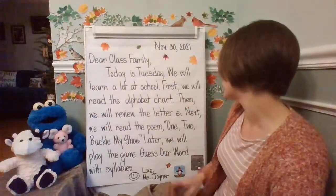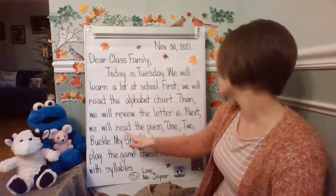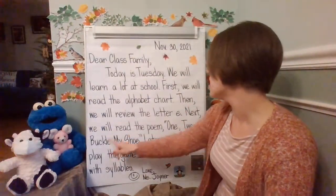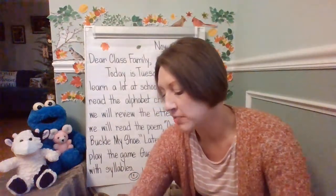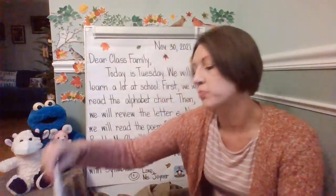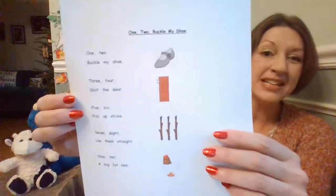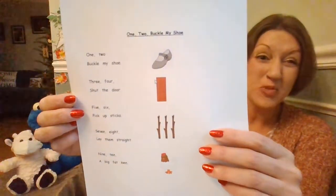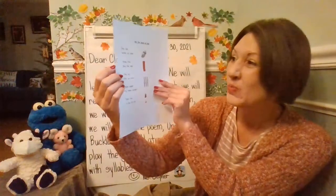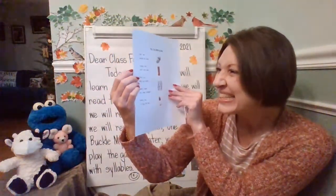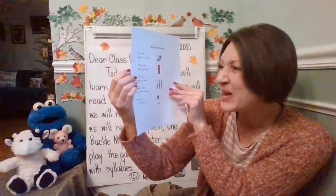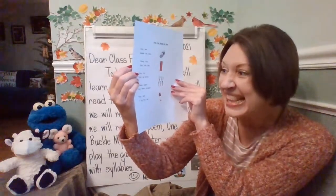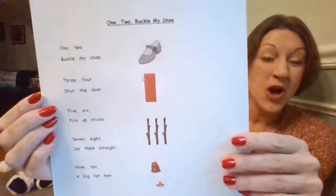All right, let's look at the next thing. Next, we will read the poem One, Two, Buckle My Shoe. We're going to be checking out this poem together: One, two, buckle my shoe. Three, four, shut the door. Five, six, pick up sticks. Seven, eight, lay them straight. Nine, ten, a big fat hen.